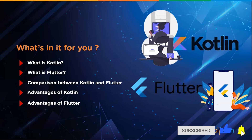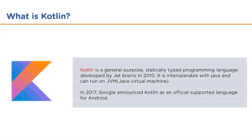Let's go ahead and learn about Kotlin. Kotlin is a general-purpose, statically-typed programming language developed by JetBrains in 2010 and later released in 2016. Statically typed means the type of the variable is known at compile time. Kotlin is interoperable with Java, which means both languages can share and use information — we can use Kotlin side by side with Java.